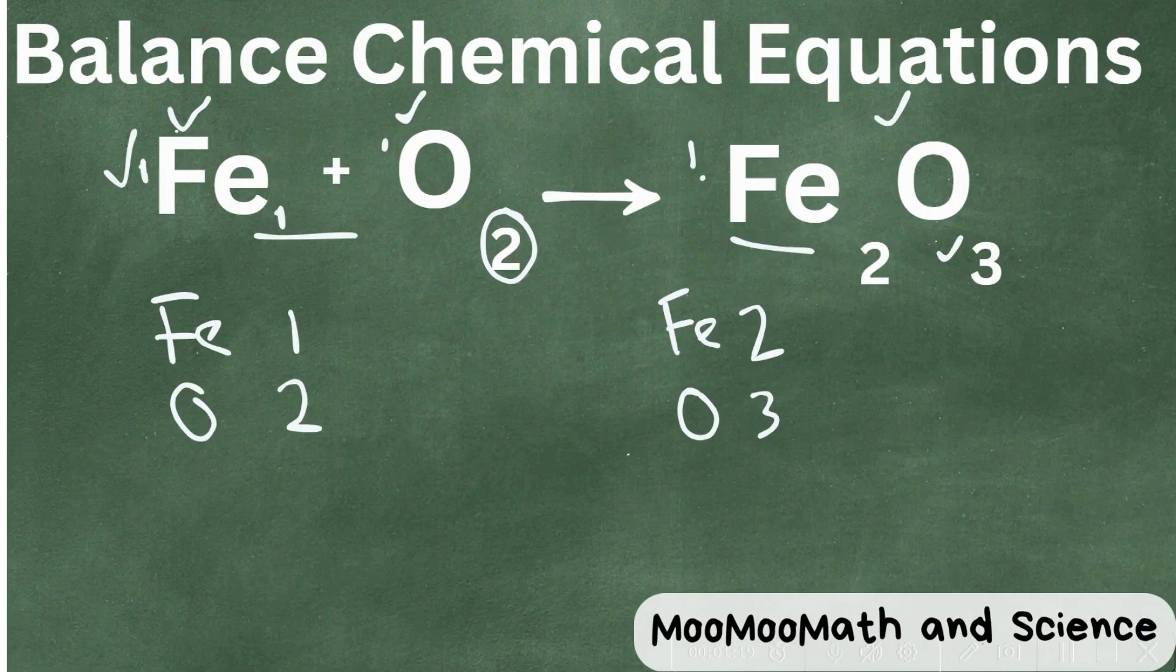Let's begin. This will be an easy way. Why don't we change this 1 coefficient to a 2 for the iron, so this will become a 2. So 2 times 1 is 2. So now we have the irons balanced, but we have a problem. Look at the oxygens.